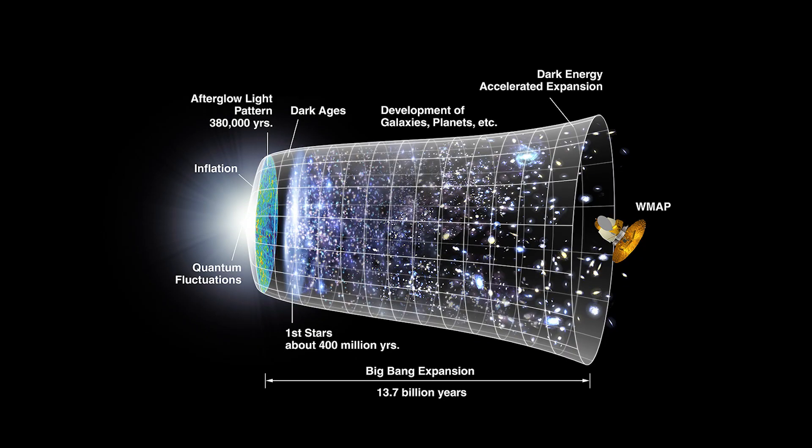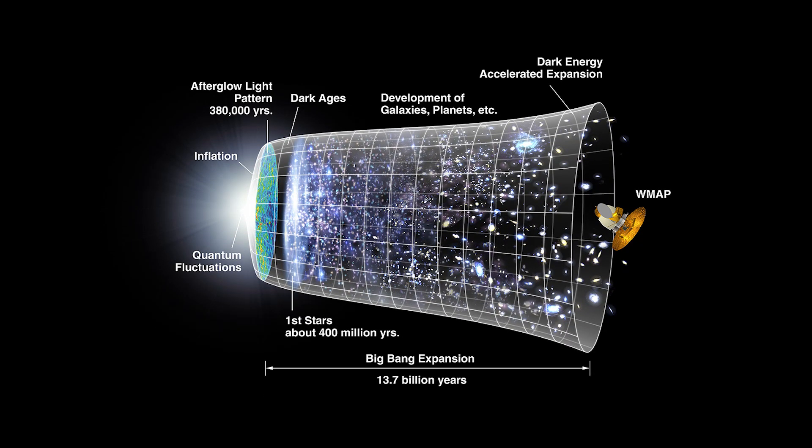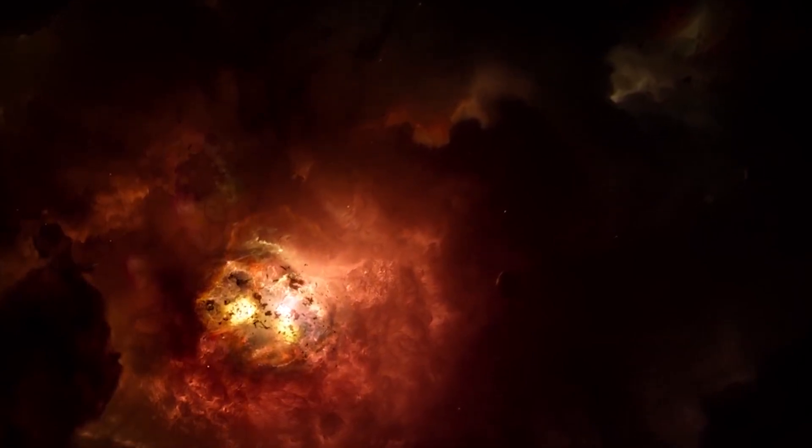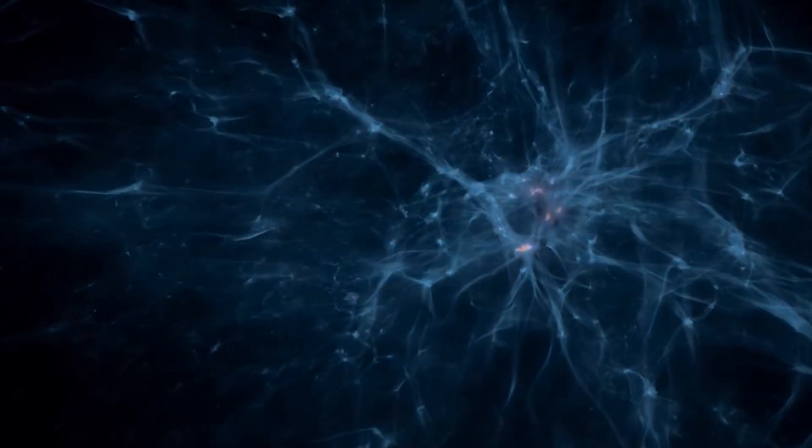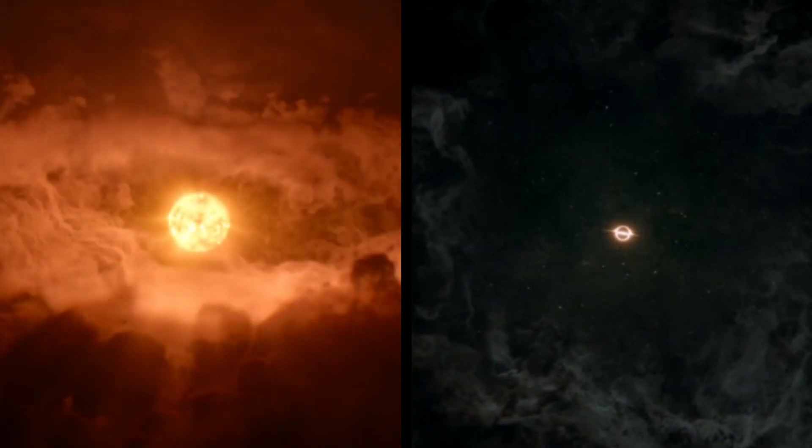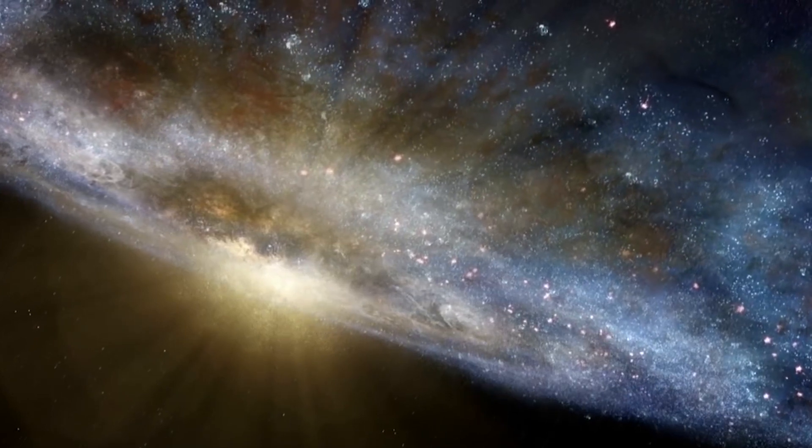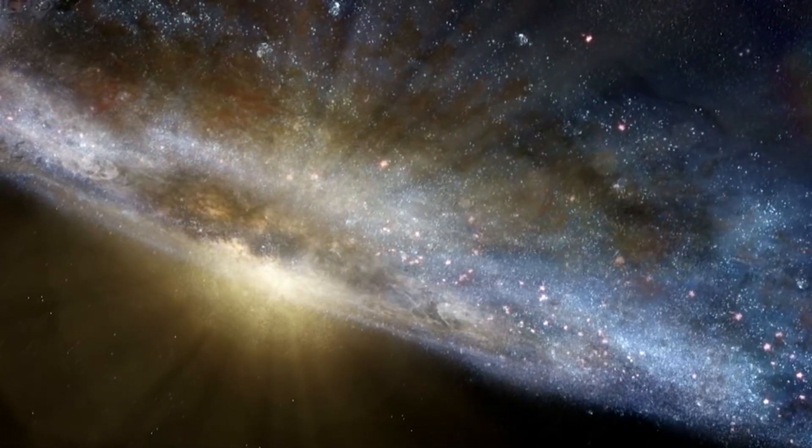The standard cosmological model, akin to the universe's foundational guidebook, outlines a sequence of events following the Big Bang. Initially, gravity gathered denser regions of cosmic gas, birthing stars and black holes. These celestial bodies then congregated, forming galaxies.